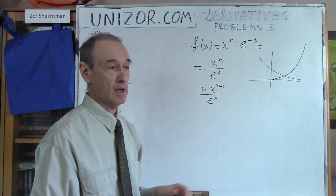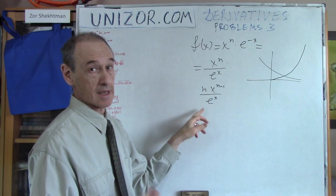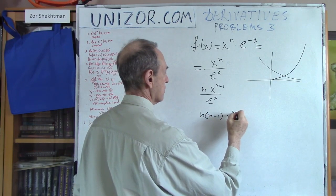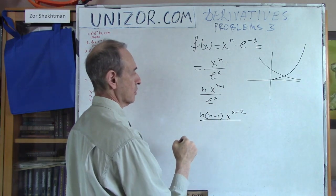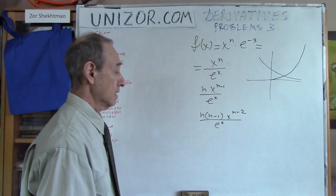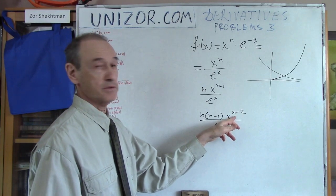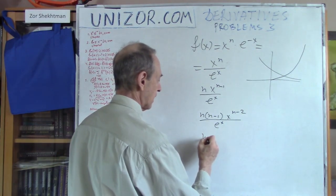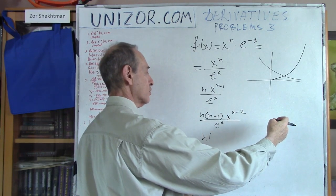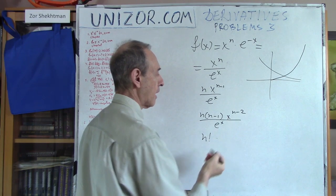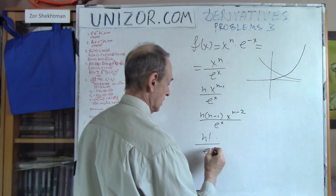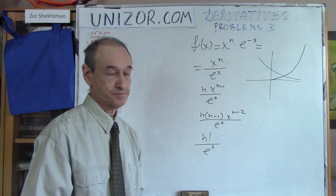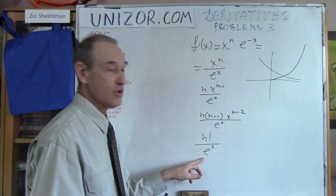We still have an indeterminate limit because both numerator and denominator go to infinity. Let's use L'Hôpital's rule again. The next step gives n(n−1)·x^(n−2) in the numerator. If we do this process n times, after n applications we have n factorial in the numerator and x to the power of 0, which is 1. In the denominator we still have e^x, which is the nth derivative of e^x.